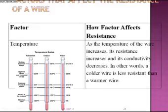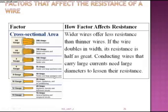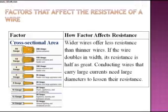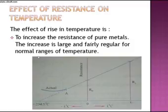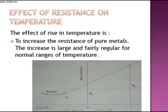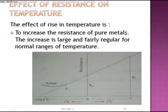This shows how resistance changes with respect to temperature. Higher length gives higher resistance — a short wire has small resistance and a longer wire has higher resistance. Similarly, higher cross-sectional area gives lesser resistance. For pure metals, a rise in temperature results in increasing resistance, and the increase is large and fairly regular for a normal range of temperature — resistance increases linearly.